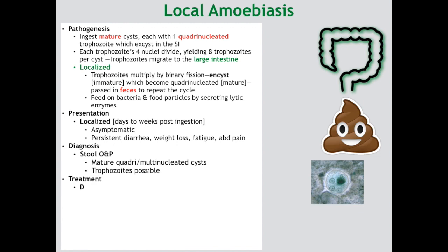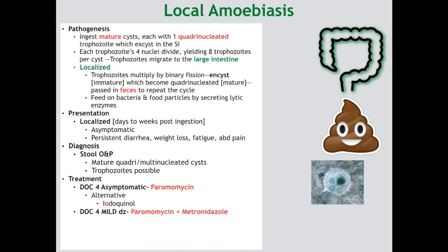Treatment options depend upon the clinical presentation. For asymptomatic carriers, the drug of choice is paromomycin, which is an aminoglycoside antibiotic, and the alternative is iodoquinol — the O is highlighted due to the side effect of optic neuritis with long-term use. For patients presenting with mild disease such as persistent diarrhea, the drug of choice is again paromomycin, however you add metronidazole. The metronidazole alternatives are tinidazole, tetracycline, and erythromycin.